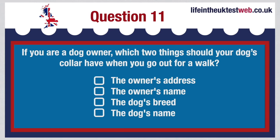If you are a dog owner, which two things should your dog's collar have when you go out for a walk? The owner's address, the owner's name, the dog's breed or the dog's name? The correct answer is: All dogs in public places must wear a collar showing the name and address of the owner.